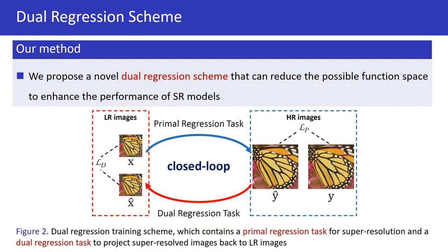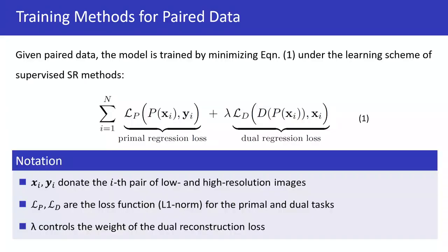we propose a dual regression scheme that contains a primal regression task and a dual regression task. Given paired data, the model is trained by minimizing the primal and dual regression losses.